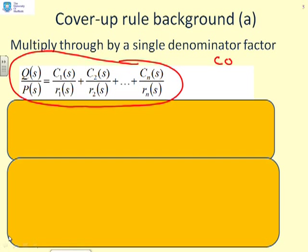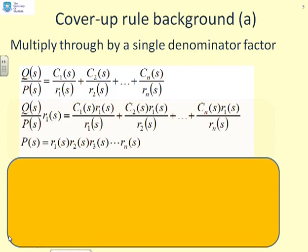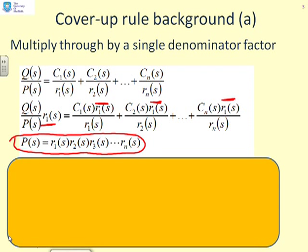This slide is what we call a concept slide, so that you can understand what's going on. We're going to multiply by R1 of S to show how we might get C1 of S. I've multiplied by R1 of S — you can see R1 appears in every term. All I've done is multiply every term by R1 of S. We've noted that P of S, the denominator, is simply the product of all the different R's: R1 times R2 times R3 and so on.